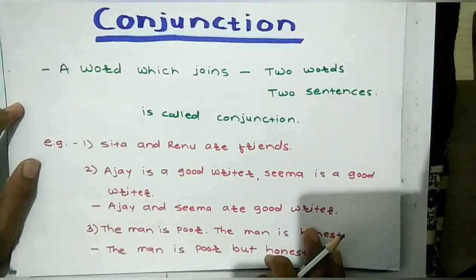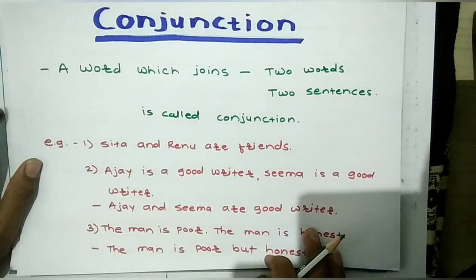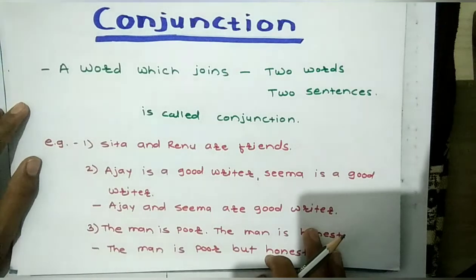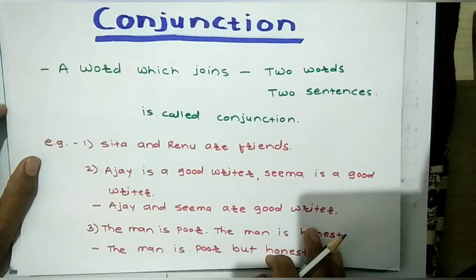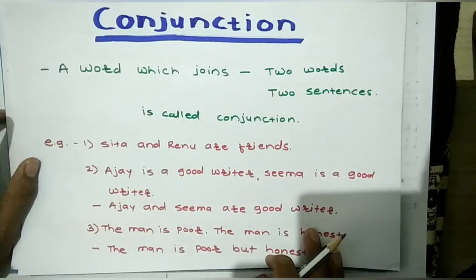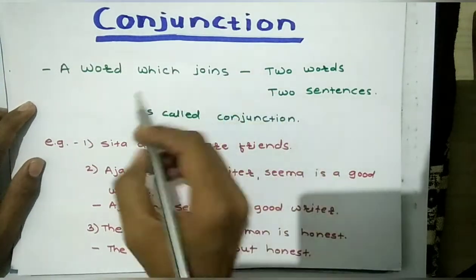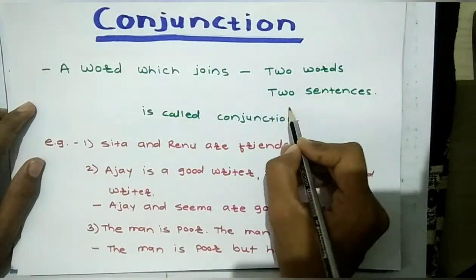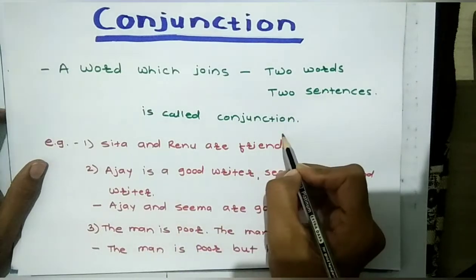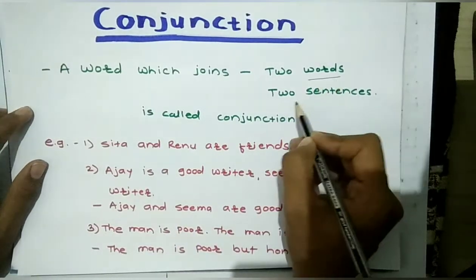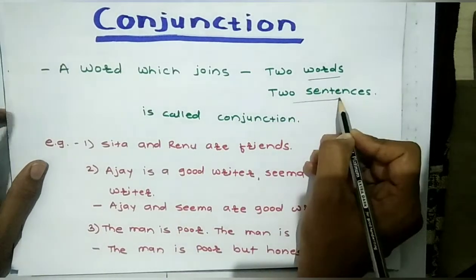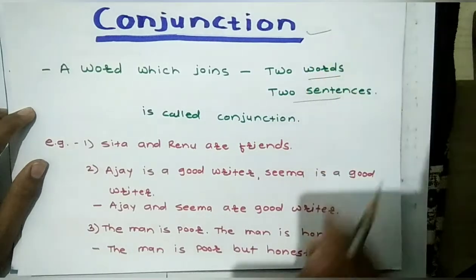In this video we will study about conjunction. This is the 7th part of speech from the 8 parts of speech that we are learning. We have already discussed noun, pronoun, verb, adverb, adjective, and preposition. This is the 7th part of speech. So let's start. What is a conjunction? A word which joins two words or two sentences is called a conjunction.